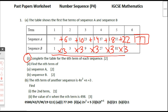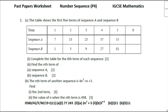Multiplying by 3 each time, so 81 times 3 is 243, which is the answer. Part 2: find the nth term of sequence a.